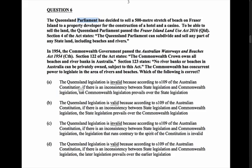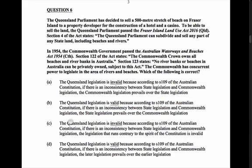Looking at the answers: A — the Queensland legislation is invalid because according to section 109 of the Constitution, if there is inconsistency between state and Commonwealth legislation, the Commonwealth legislation prevails. That sounds true, but let's check the others. B — the Queensland legislation is valid because according to section 109 the state prevails — that's not true. C — the Queensland legislation is invalid because legislation contrary to the spirit of the Constitution is invalid — I've never heard of anything about contrary to the spirit of the Constitution; it's actually all about residual or concurrent powers.